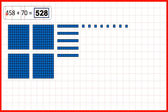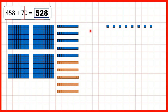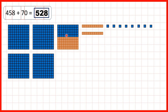Then we started with 458 — that's 4 hundreds, 5 tens, and 8 ones. Adding 70 means adding 7 tens, but that gives us 12 tens altogether. If we have 12 tens, we need to take 10 of those tens and regroup them into an extra 100. That's why our hundreds digit goes from a 4 to a 5 — our hundreds digit increases by 1 because adding our tens gave us a 2-digit answer.